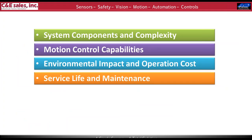I've broken this into four sections: first, system components and complexity; next, motion control capabilities; then environmental impacts and operating cost; and lastly, service life and maintenance requirements for each system.